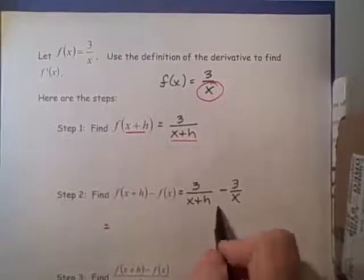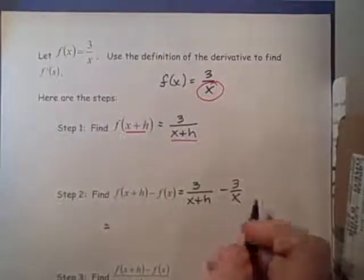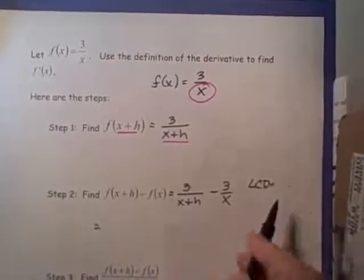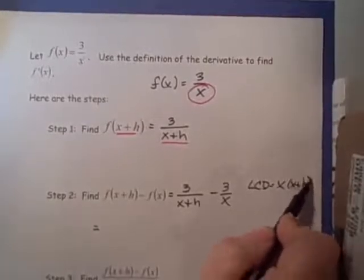In order to simplify, we need to get a common denominator. The common denominator, our LCD, is x times x plus h.